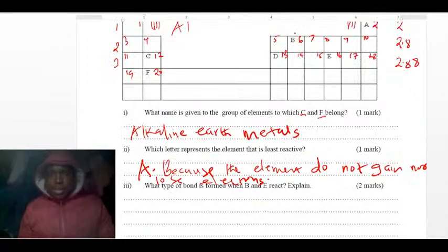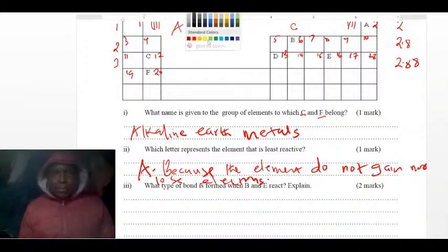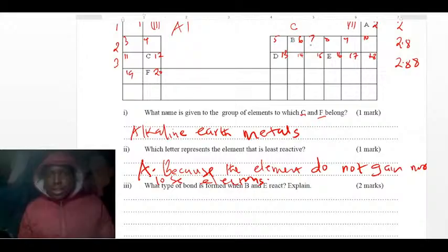So B is here. B is carbon. And then, you can see that B is carbon. And E is, this is number 16, that is sulfur. Both of them, they are non-metals. So it's going to form CS.